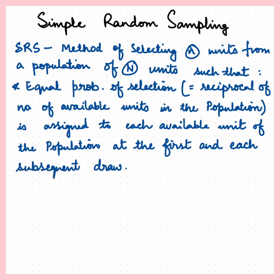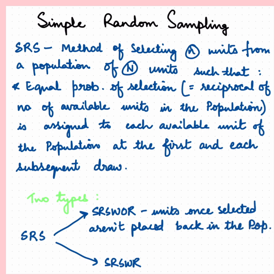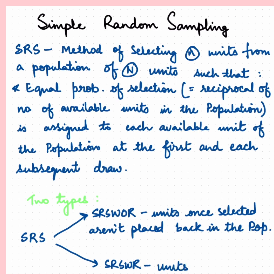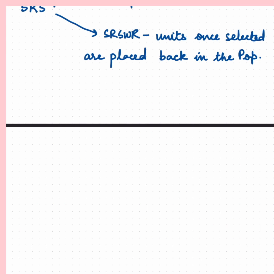Under simple random sampling we have two types: one is without replacement and one is with replacement. In simple random sampling without replacement, units once selected are not placed back in the population. However, in simple random sampling with replacement, units once selected are placed back and can be chosen again.